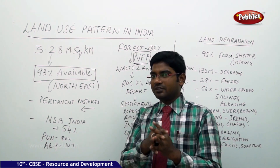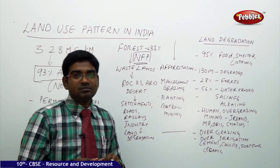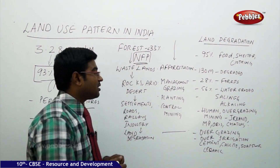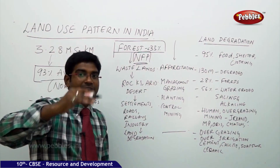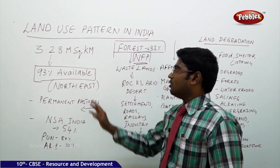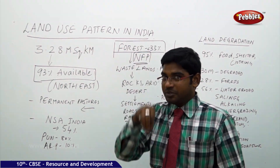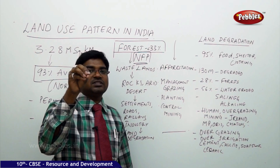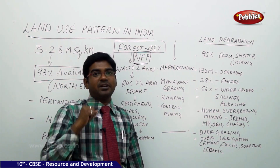Moving on to understand forests in India — according to the National Forest Policy, forests should cover nearly 33% of the entire land. Out of 3.28 million square kilometers, we should have at least around 1 million square kilometers of forest. But India has only around 65,000 to 67,000 square kilometers of land covered by forest, which falls far short of the national requirement.